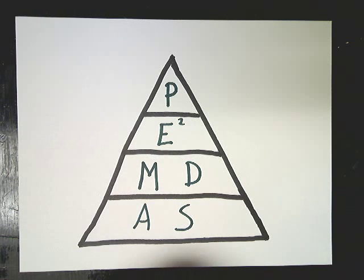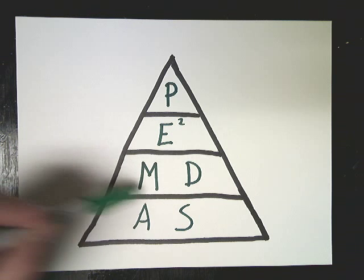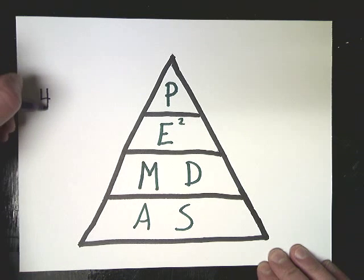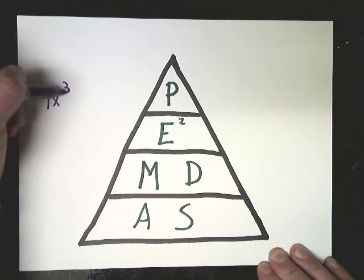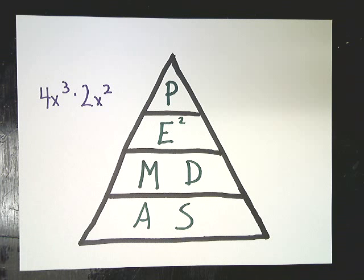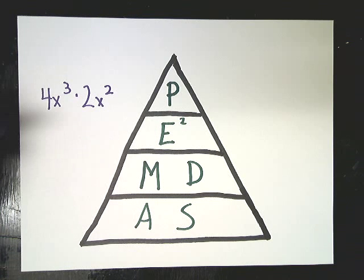This is the hierarchy of order of operations. Multiply and divide, doesn't matter what order they come in, just do them left to right. Add and subtract, just as long as it's left to right. Now, what does that mean for us? Well, if we're given a problem like 4x to the third power times 2x squared, it's helpful to think about it this way. This is the kind of stuff we're dealing with.